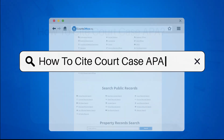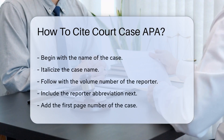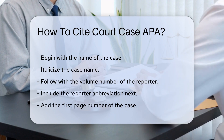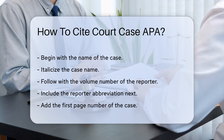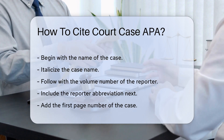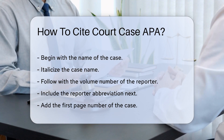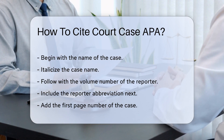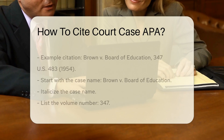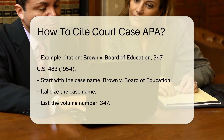When citing a court case in APA format, start with the name of the case — italicize the case name. Follow this with the volume number of the reporter, then include the reporter abbreviation. After that, add the first page number of the case. For example, if the case is Brown v. Board of Education, 347 U.S. 483, 1954, it is cited as follows.